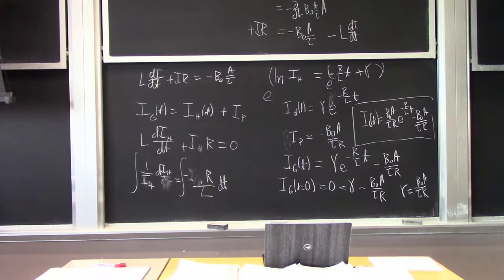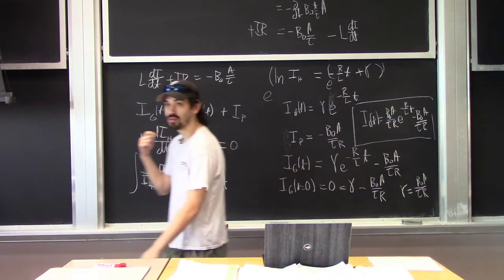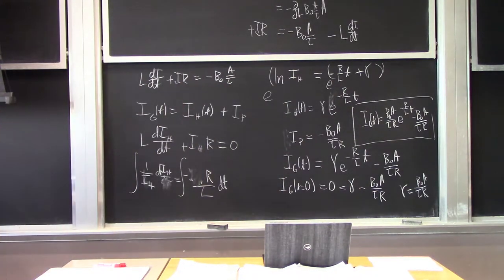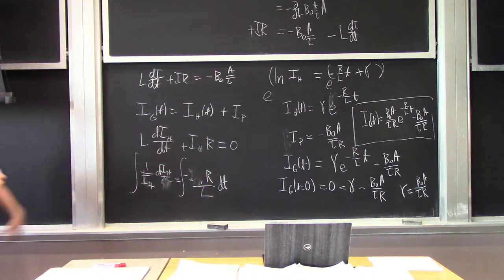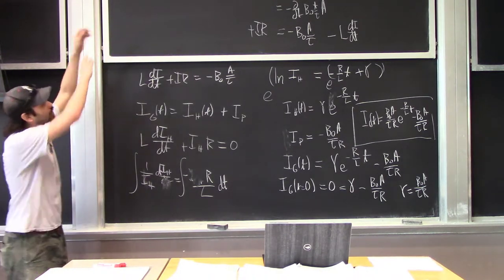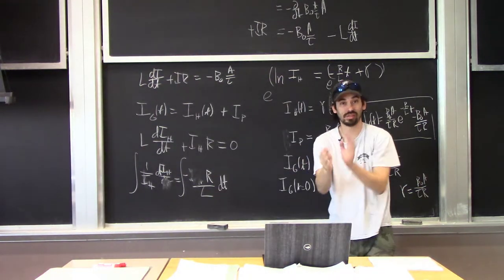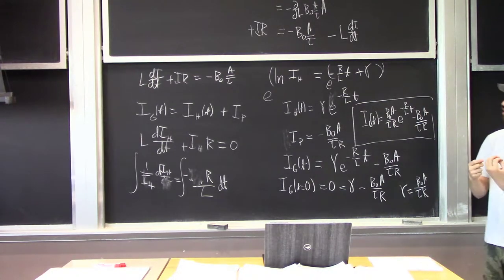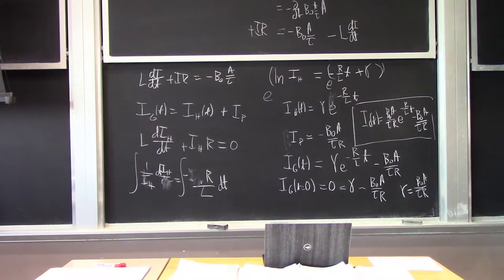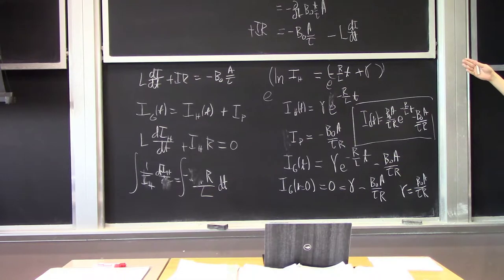A lot of these problems are really the same structure. What could be different? You could change the directions chosen — that should give the same answer since the physics is independent of sign convention. You could give a different B as a function of time. You could also put a battery in the loop: going around the loop, if you see the minus terminal, that gives a −V term. You could put a second resistor in, giving another IR term.